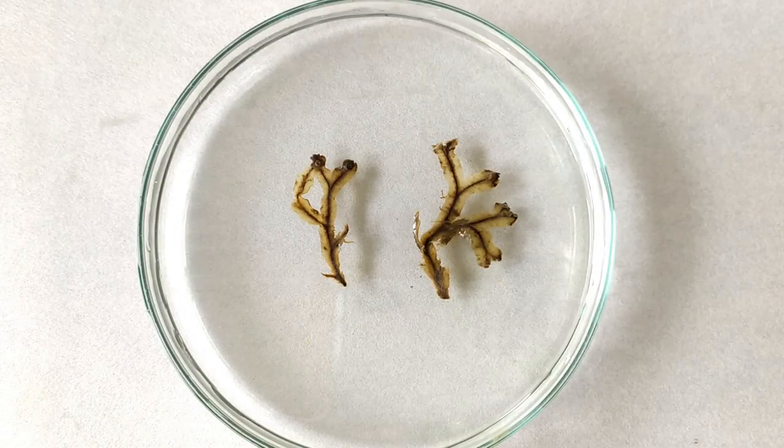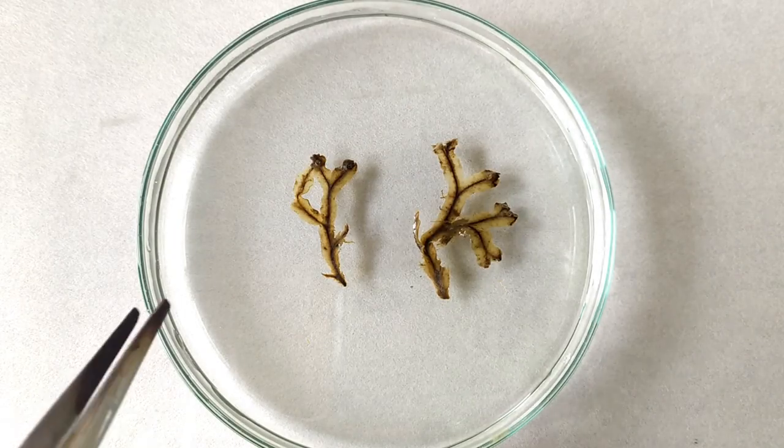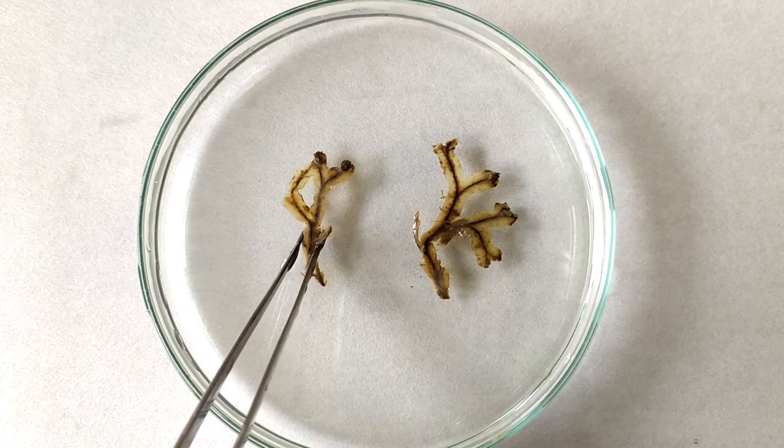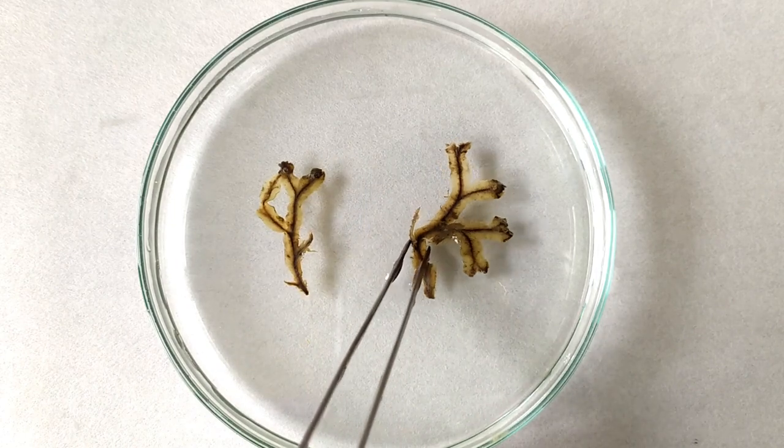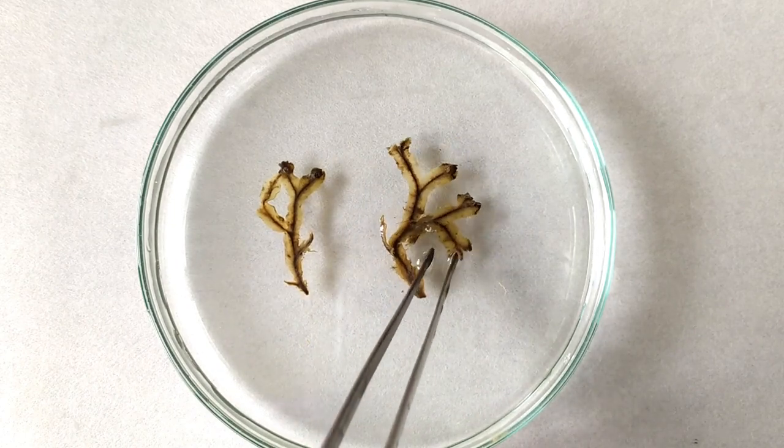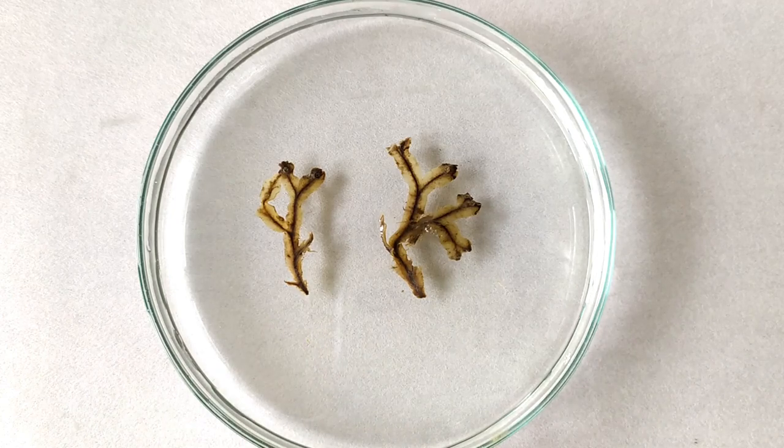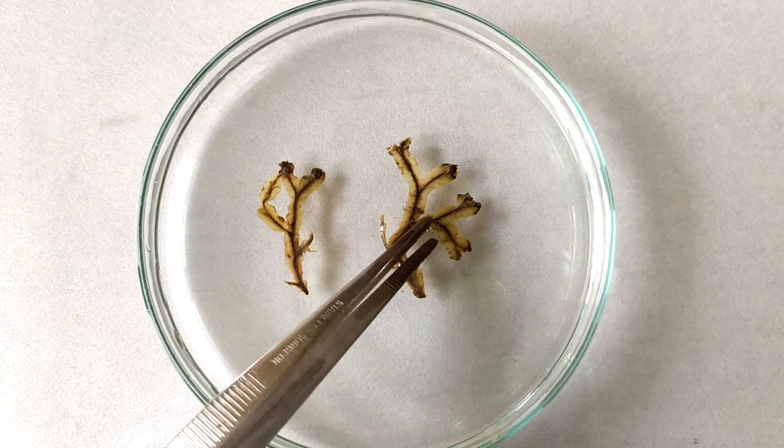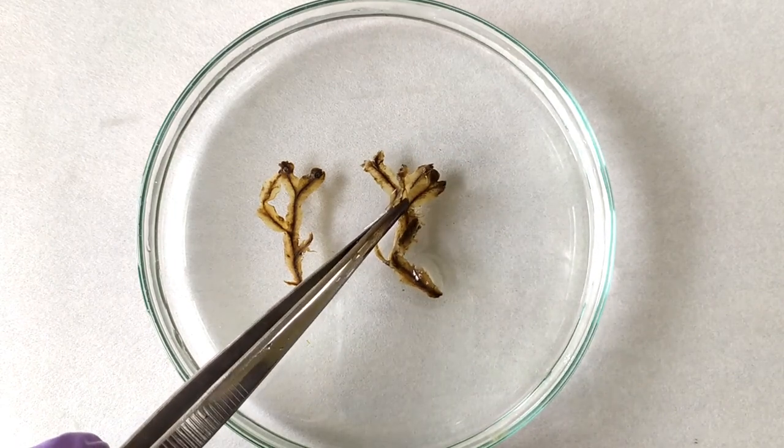For dorsiventrally flattened structures such as liverwort thallus, which is thicker than a typical leaf, you can still use a pith material to get good sections, although freehand sectioning without the use of a pith material is also possible, but requires extremely steady hands and keen attention during sectioning.